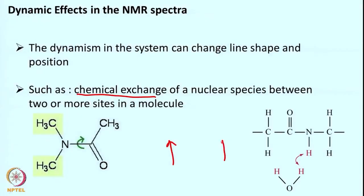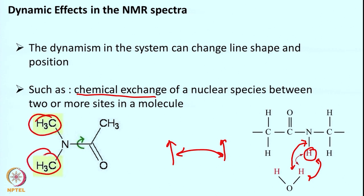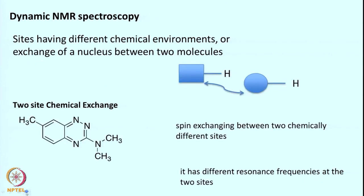If a spin is hopping between two states, that is called exchange between the two spins. For example, here the amide bond NH is exchanging with water — this spin is hopping between the bulk water and the bound NH. Such a phenomenon is called chemical exchange. For another example, if the CN bond rotates, this CH₃ and that CH₃ can change position, and these effects in NMR will give various dynamic effects and their spectrum can change. That is what today we are going to mostly focus on.